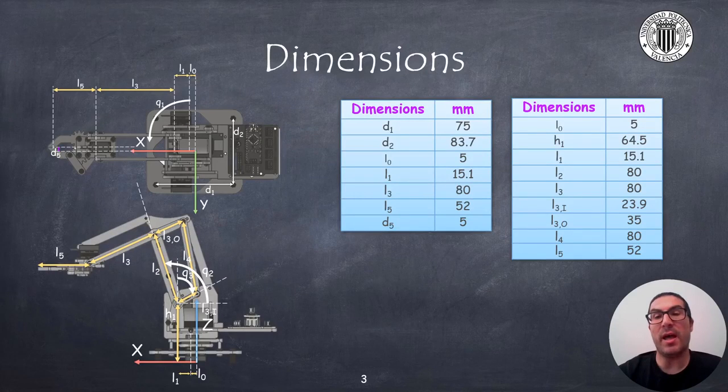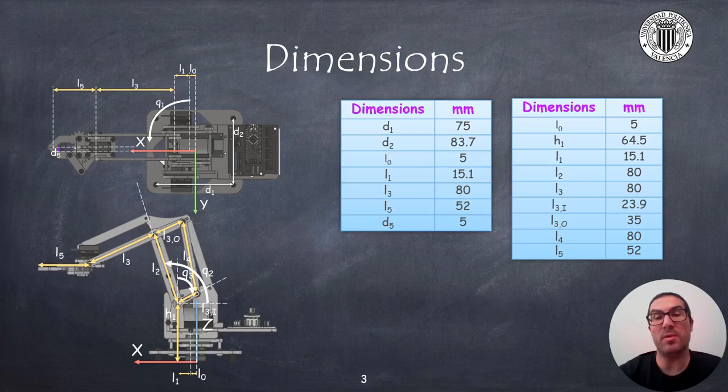In the tables, I have included the dimensions of the most relevant parameters used in the robot kinematics. Indeed, these dimensions were already introduced in the previous video, but I also included here for reference.